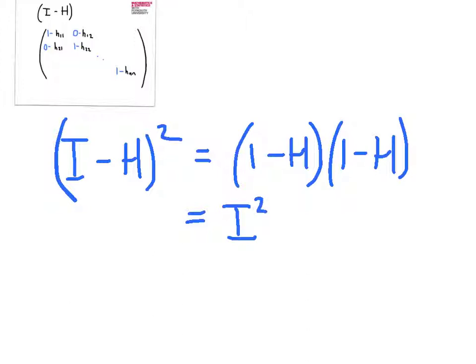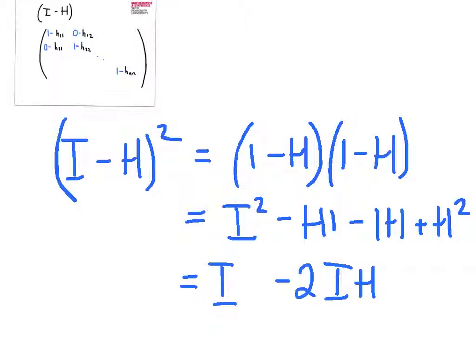So I have an identity matrix squared, and I have to subtract an H I, and I have to subtract an I H, and I have to add an H squared. Well, the identity matrix squared is just an identity matrix. These two things here are the same, so I'm subtracting twice the identity matrix multiplied by the hat matrix. And the last thing, we already saw that the hat matrix was idempotent, so hat squared is hat.